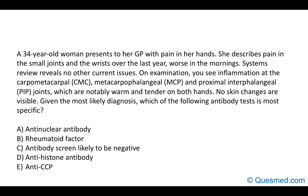Have a look at the second question and pause the screen. The answer here is anti-CCP. We have a 34-year-old woman with pain in the small joints and wrist, worse in the mornings, with inflammation of the carpometacarpal, metacarpophalangeal and proximal interphalangeal joints - warm and tender but no skin changes. The question asks you to identify the diagnosis and then find the most specific antibody test.